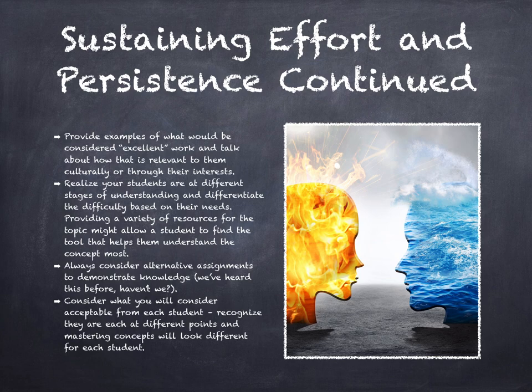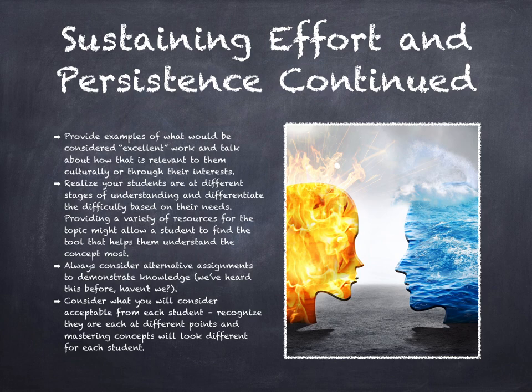This leads us to considering alternative assignments. One person might be really creative and can demonstrate a chemistry concept in an art form, while another student is very analytical and would prefer to present it in a presentation or in a paper. By providing them the options, students might be able to better present their knowledge. Consider what's acceptable from each student, because each student is different. Sometimes recognizing that one student struggled to understand certain concepts but worked really hard can make a difference between a B and a C when grading. Consider the amount of work each student has to put in to grasp the concept — for some it'll come easily, and for others they're going to struggle with every single aspect.